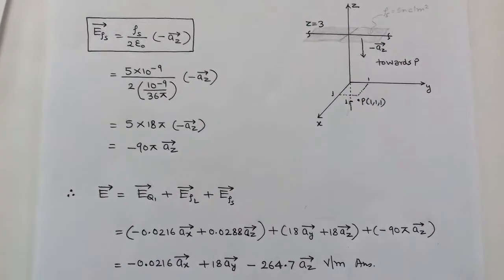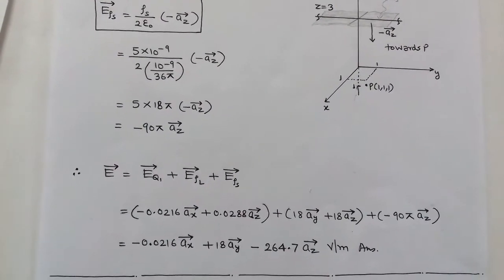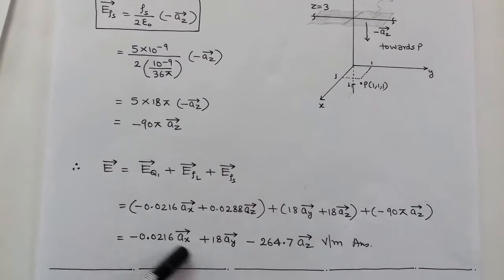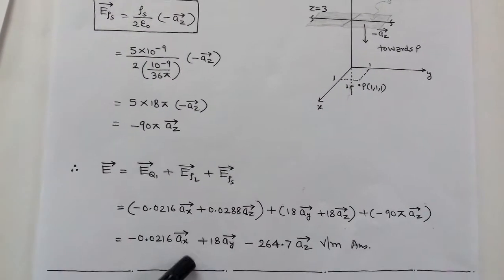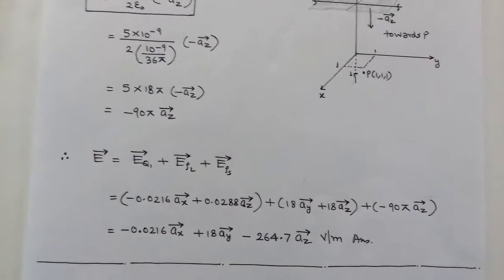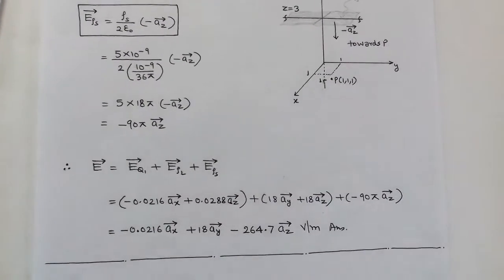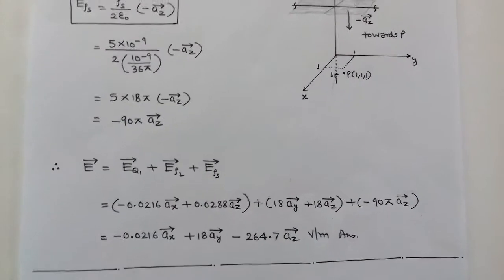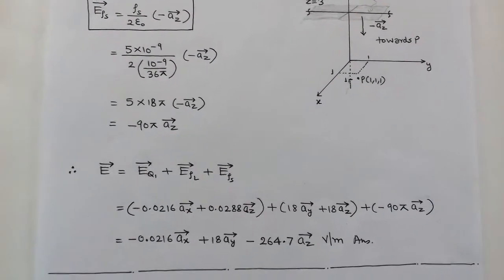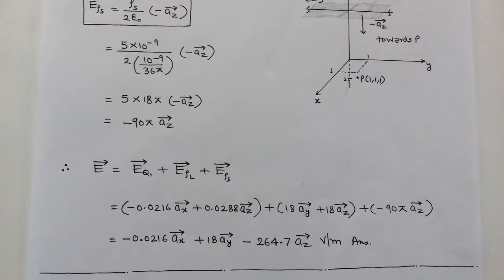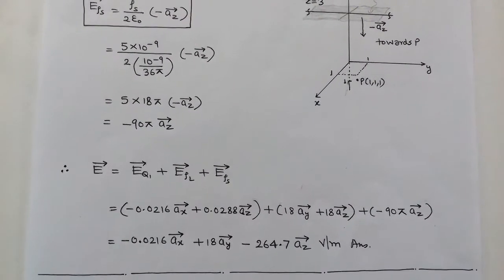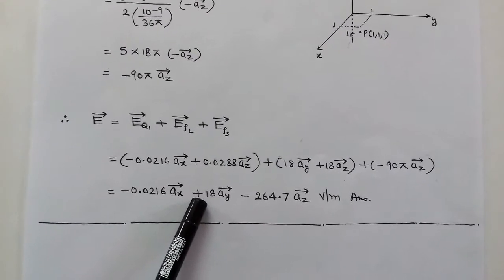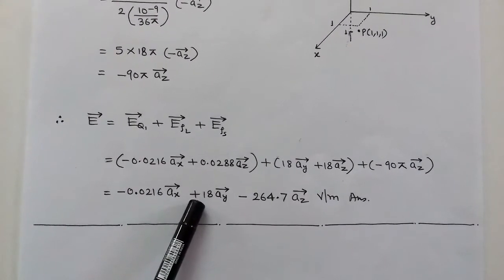Adding all three cases — electric field due to point charge Q1, line charge ρL on the x-axis, and surface charge ρs at z = 3 — the total electric field intensity at point P is: −0.0216 x̂ + 18 ŷ − 264.7 ẑ V/m.